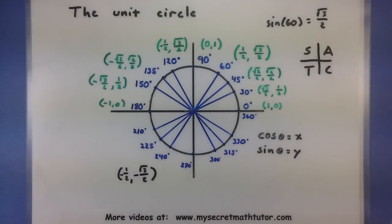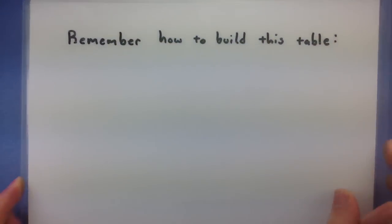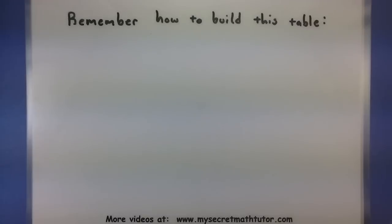So how can we go about this? Well, the quick and easy way to do this is to remember how to build the following table. If you can remember how to build this table, you will get all of the values in that first quadrant. Here's what you need to do.